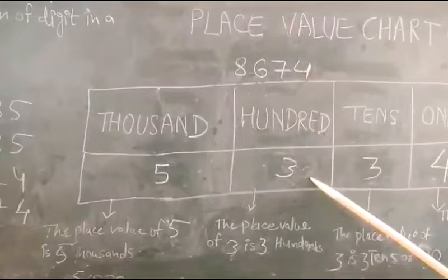in the 100's place, the place value of 6 is 600. In the 1000's place,